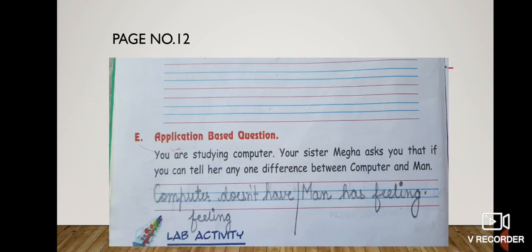Now next is D part, answer the following question. But we have to do the question answer in notebook. So first we will finish with the book exercise, then we move to the question answer. Now in book exercise there is one part on the next page, that is page number 12.